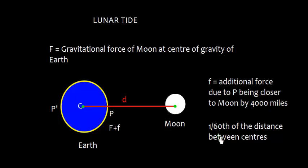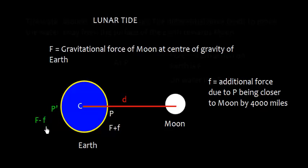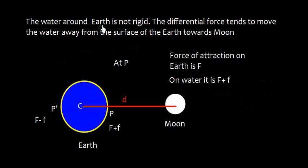However, there is additional force, f (small f), due to point P being closer to moon by 4,000 miles, that is 1 by 60th of the distance between the centers of earth and moon. Similarly, at P', there will be force F minus small f. The water around the earth is not rigid. The differential force tends to move the water away from surface of earth towards the moon.